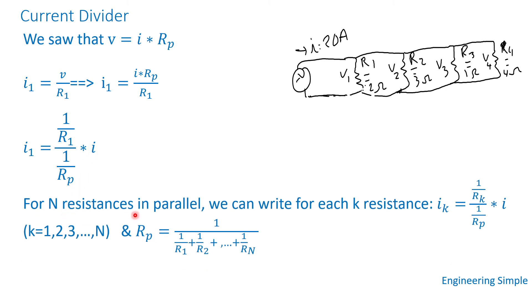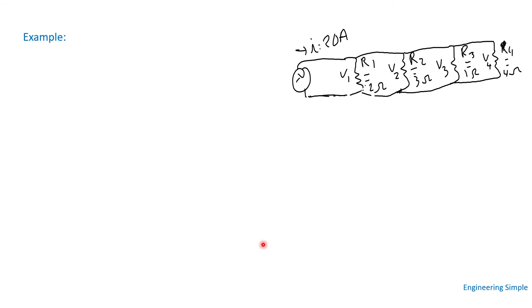For n resistances in parallel — R1, R2, R3, ... Rn — the current through any resistance Rk is: Ik equals (1/Rk) divided by (1/Rp) times the total current I. The equivalent parallel resistance Rp equals 1 over (1/R1 + 1/R2 + ... + 1/Rn). This formula is called the current divider.